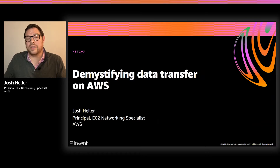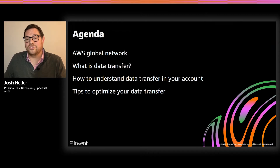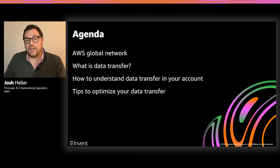For the next 30 minutes, we're going to talk about data transfer on AWS. We'll begin by discussing the AWS global network — it's easiest to understand data transfer once you understand how AWS operates our global network. Next, we'll talk about data transfer itself. There are different kinds depending on how you're building on AWS, and it's important to understand how it works across the parts of our cloud.